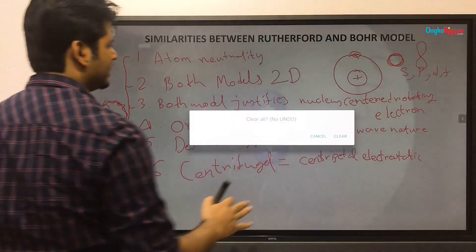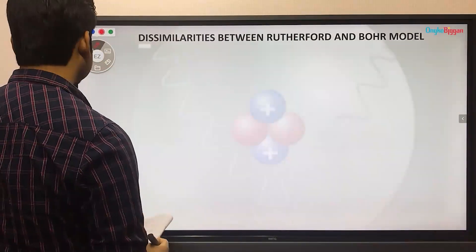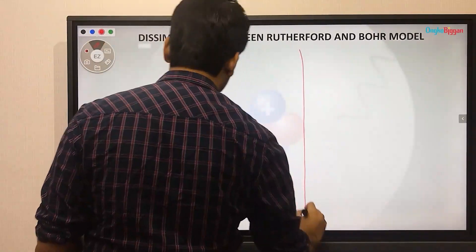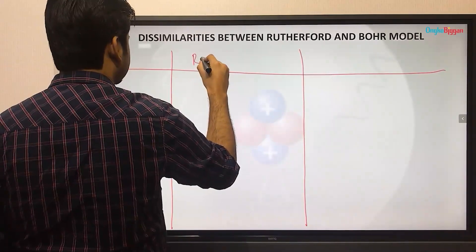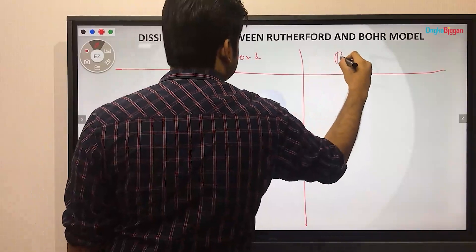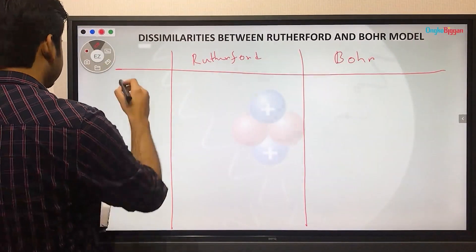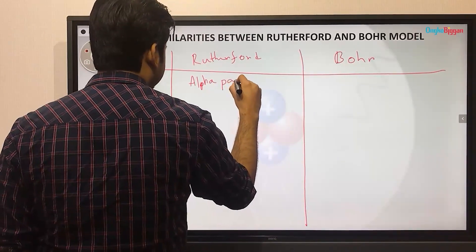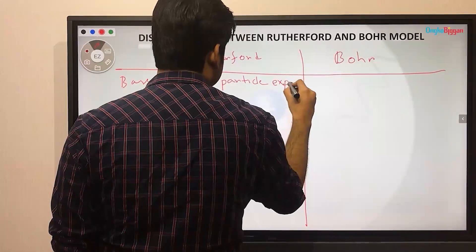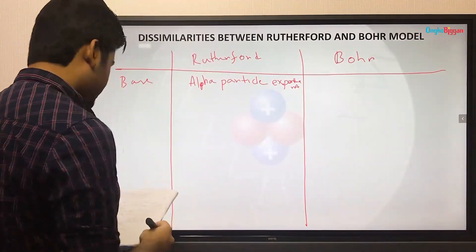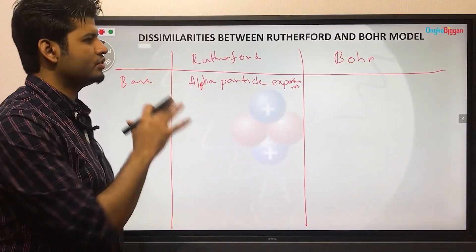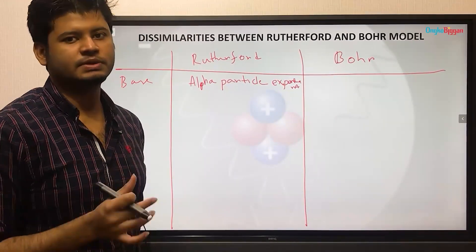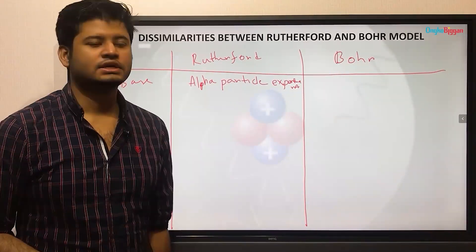Next, we have dissimilarities to define. First, I will show you the Rutherford model. The Rutherford model was based on the alpha particle experiment. I will show you the Rutherford model's problem, which is related to the energy-related equation, the momentum-related equation, and the electron orbit — the idea of what he was talking about.